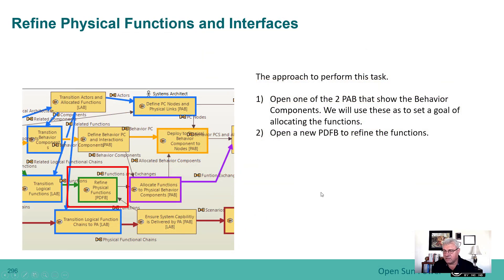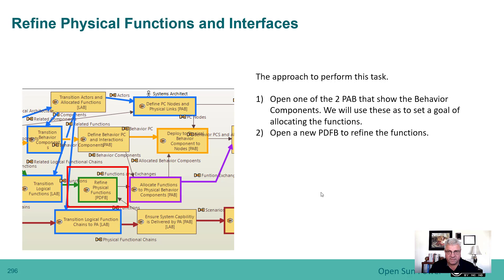The steps of the process are: we're going to open one of the two PABs that we modified in the last section, show the behavior components, and use these to set the goal of allocating all the functions. The functions have already been transitioned, so we're just going to put them on one of the PABs — one of the behavior components. Then we're going to look at whether we can move them around to all the behavior components we created. If we can't move them around by allocating them, we're going to have to refine them, and that's where we open up a new Physical Data Flow Blank diagram.